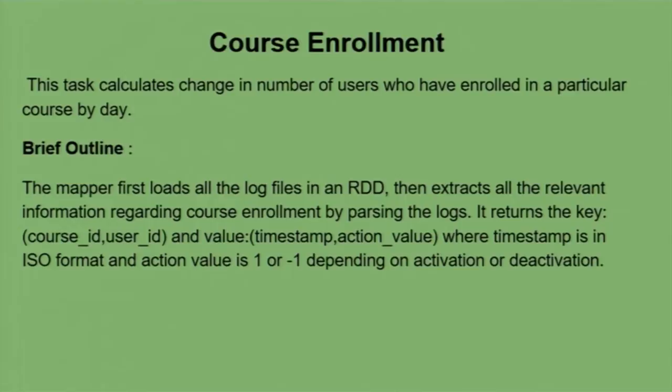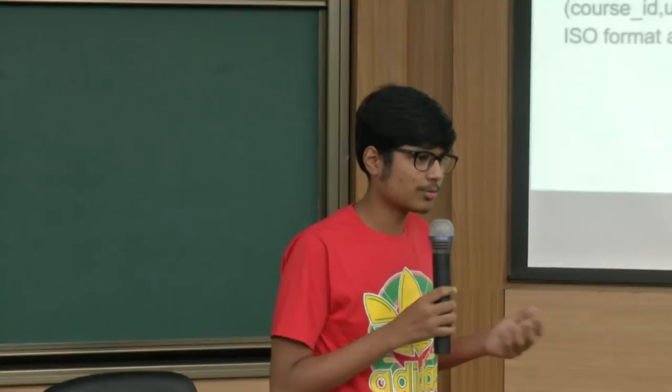The first converted task was course enrollment, which calculates the net change in enrolled users per date per course. It calculates the change per day, which is a huge amount of computation requiring big data tools. It also provides more information about enrollment, such as enrollment according to demographics — which city has the most students enrolled — and enrollment according to age group.